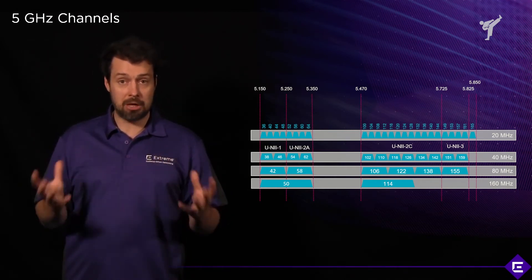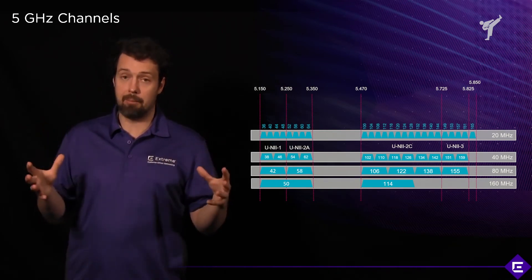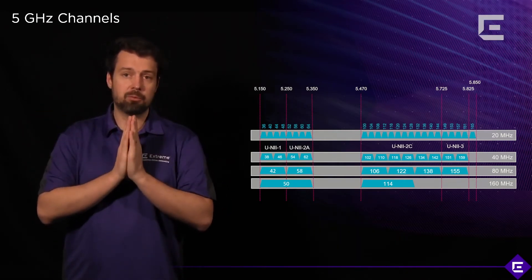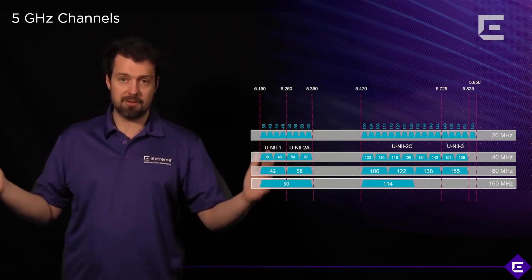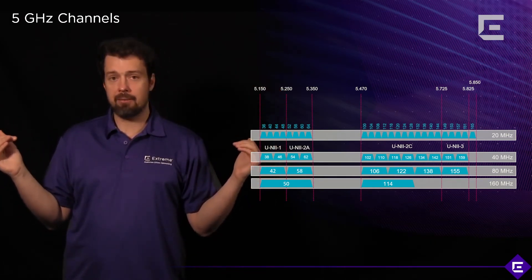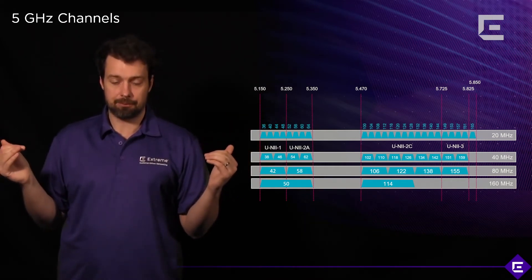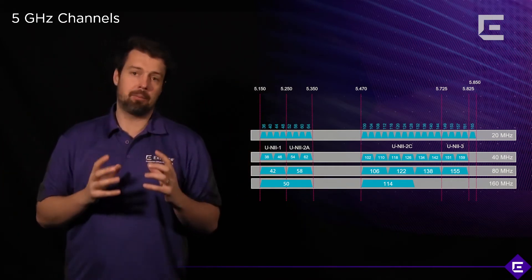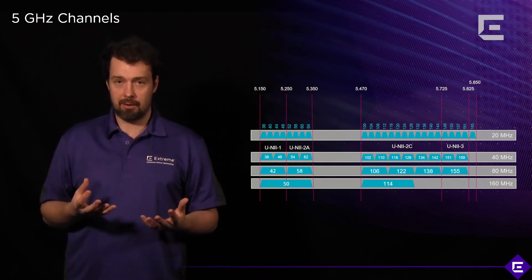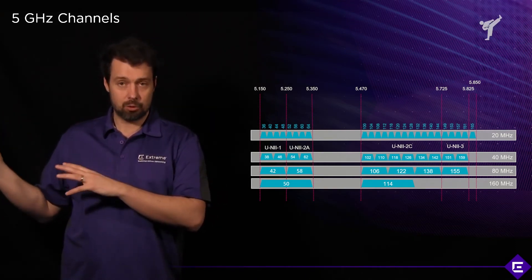A couple of things to remember about channel bonding: while it gives you a higher data rate and higher bandwidth, you also have to use that same output power to cover a wider frequency band, which means your SNR will reduce. Roughly, every time you do channel bonding you reduce your signal-to-noise ratio by 3dB. Use channel bonding wisely — a general rule of thumb is only do it when you have DFS channels available and when you actually need those data rates.